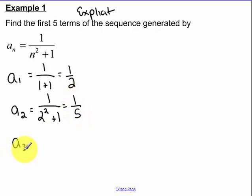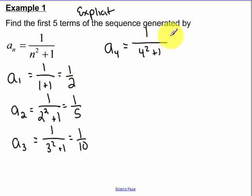Our third term, 1 over 3 squared plus 1. 3 squared is 9 plus 1 is 10. Our fourth term is equal to 1 over 4 squared plus 1, 1 over 17. Our fifth term is 1 over 5 squared plus 1, 25, 1 over 26.